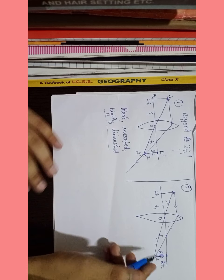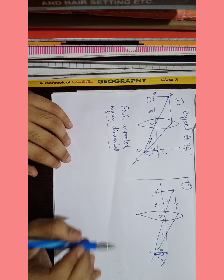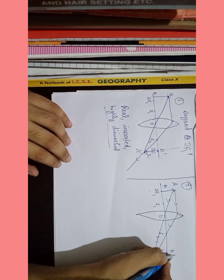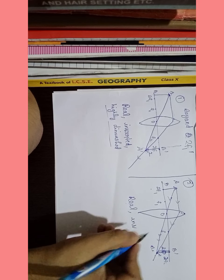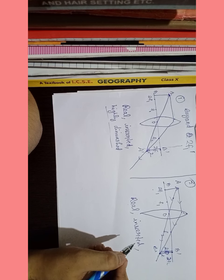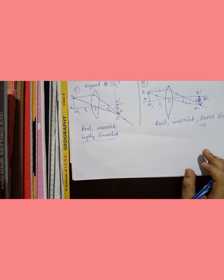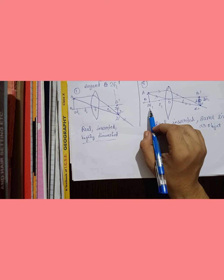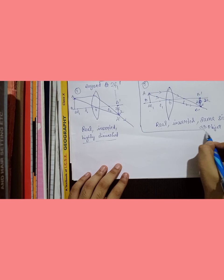When the object is at 2F1, the image is formed at 2F2. The characteristics of this image: it is real, since it forms on the other side of the lens. It is inverted. And it is the same size as the object. This is the second case.